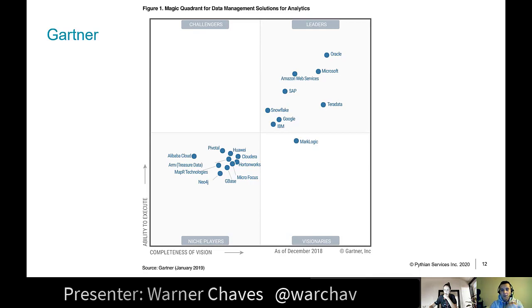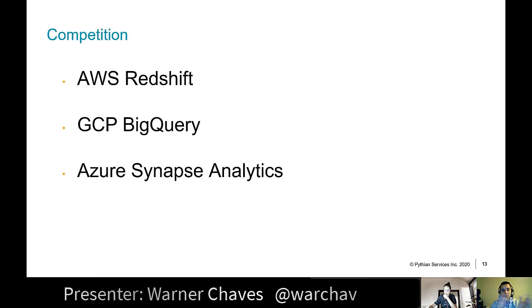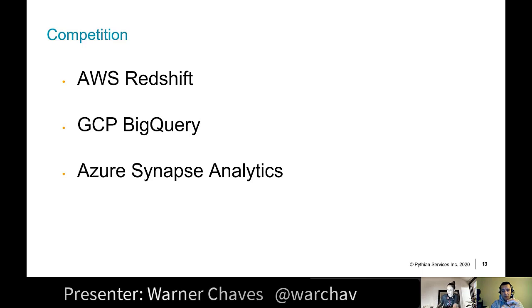The main competition is the big three cloud providers — all have their own data warehouse or data lake services. AWS has Redshift (since 2014), GCP has BigQuery, and Azure had Azure SQL Data Warehouse which was rebranded about a year ago into Azure Synapse Analytics, bundling the SQL data warehouse engine with Spark. So Snowflake is competing against Amazon, Google, and Microsoft in this space.